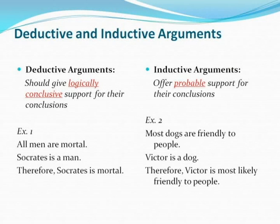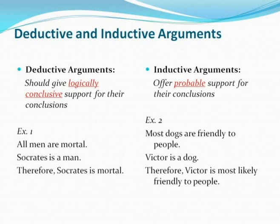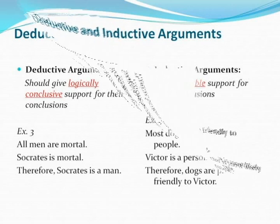Let's look at a couple of examples of both types of arguments. In example one, the deductive argument, we can see that the conclusion follows logically from the premises: all men are mortal, and since Socrates is a man, Socrates must also be mortal. In example two, the inductive argument, we can assert based on the history of cohabitation between people and dogs that dogs are generally friendly toward people. Since Victor is a dog, it would be a reasonable assumption that Victor is friendly to people. We can't know for certain that Victor is friendly, because we also have experiences in which dogs are not so friendly. So the conclusion for our deductive argument is much stronger than the conclusion for our inductive argument.